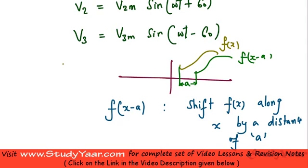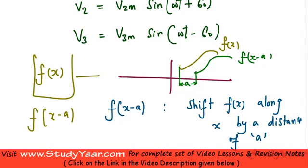So in general, if you know how to trace curve f of x, then in order to trace f of x minus a, all you have to do is push the whole curve in x direction by a distance of a. Similarly, if you want to find out what is f of x plus a, then you can write this as f of x minus negative a.